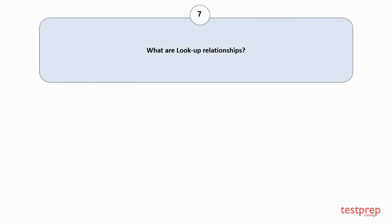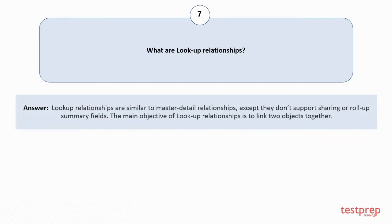Question number seven: What are lookup relationships? Lookup relationships are similar to master-detail relationships except they don't support sharing or roll-up summary fields. The main objective of lookup relationships is to link two objects together.